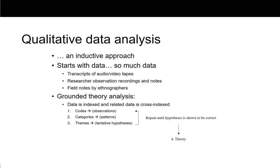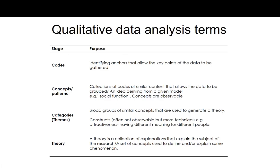Once we have a tentative hypothesis, we then go back to our data and ask: does this always occur? We look for cases where it doesn't occur, and we start comparing what we call negative cases — observations that mean our hypothesis doesn't work. Does that mean our hypothesis is wrong, or does it mean there are different contextual concepts that need to be built into our theory to explain everything that's going on? Grounded theory analysis in your textbook is also referred to as data reduction.